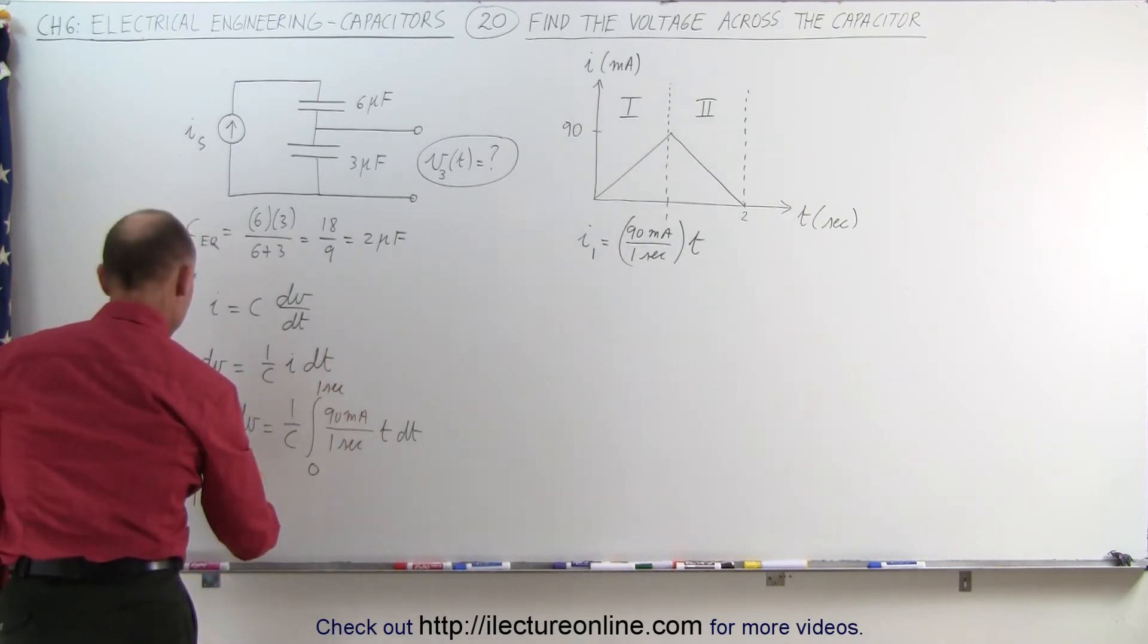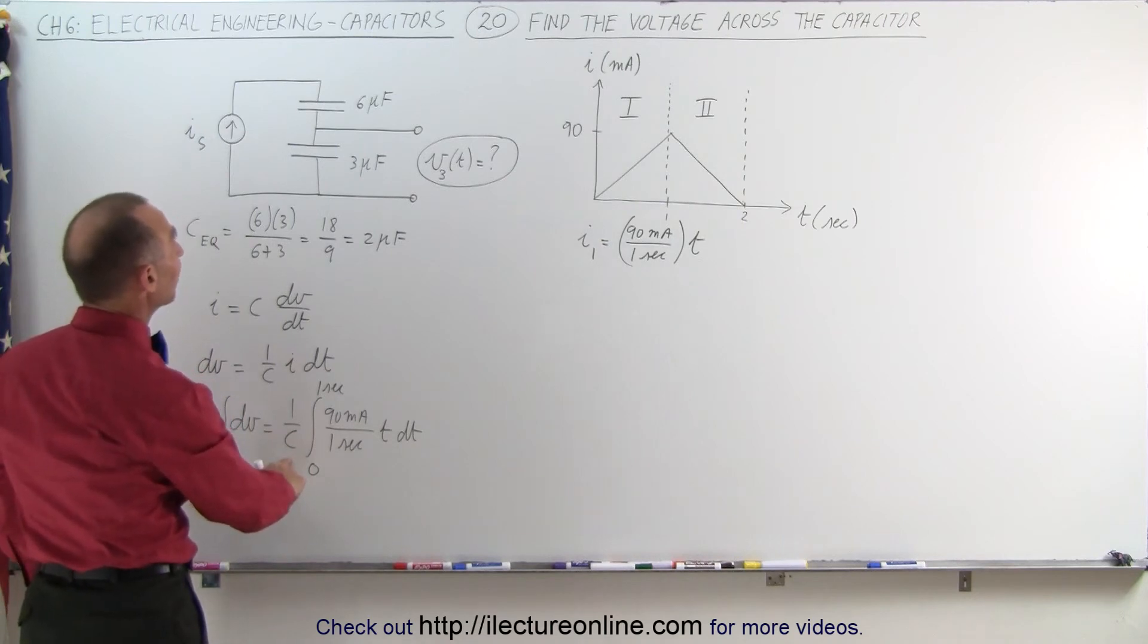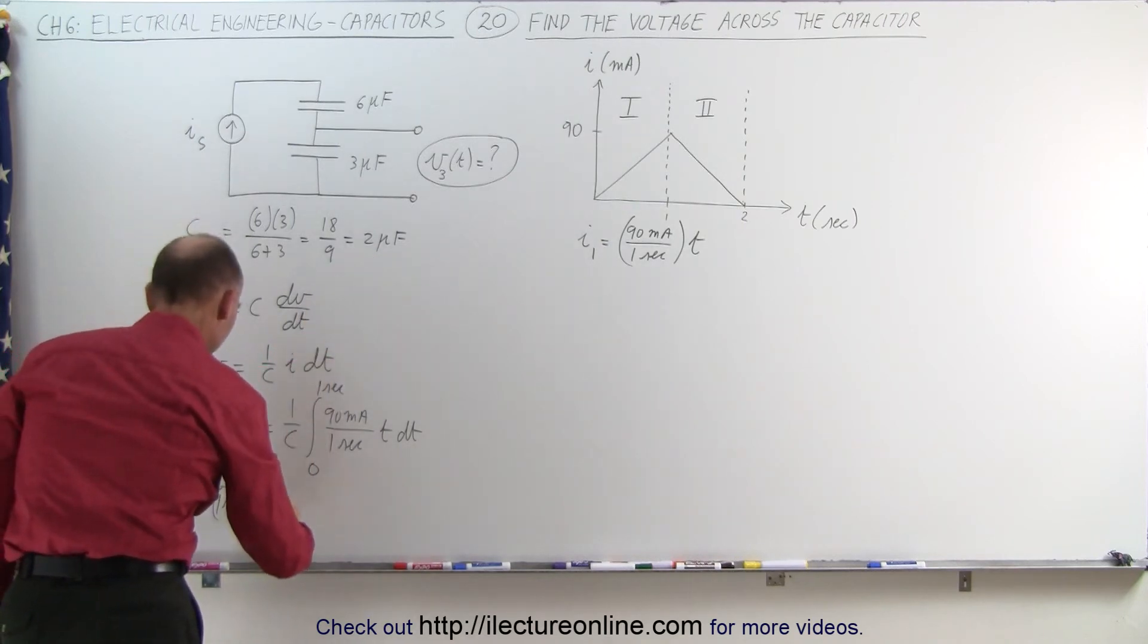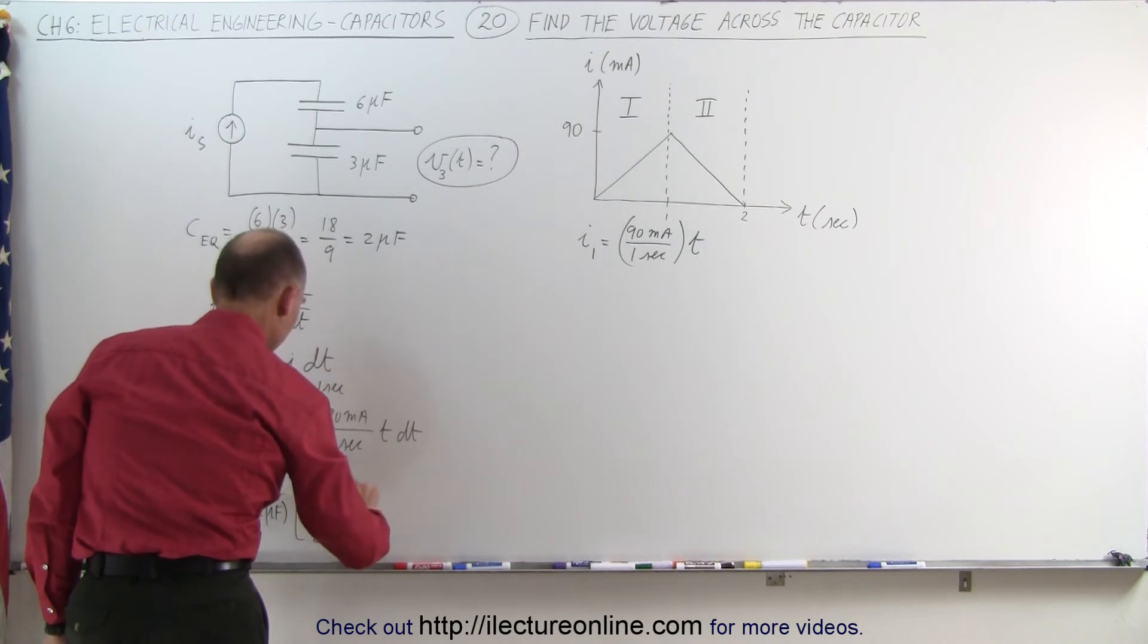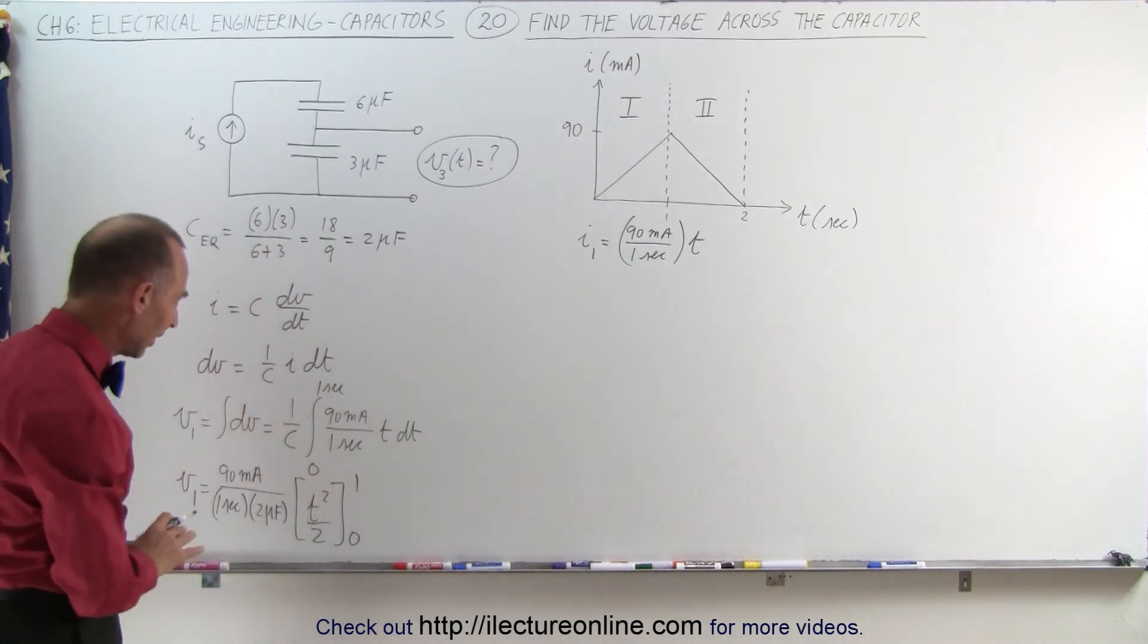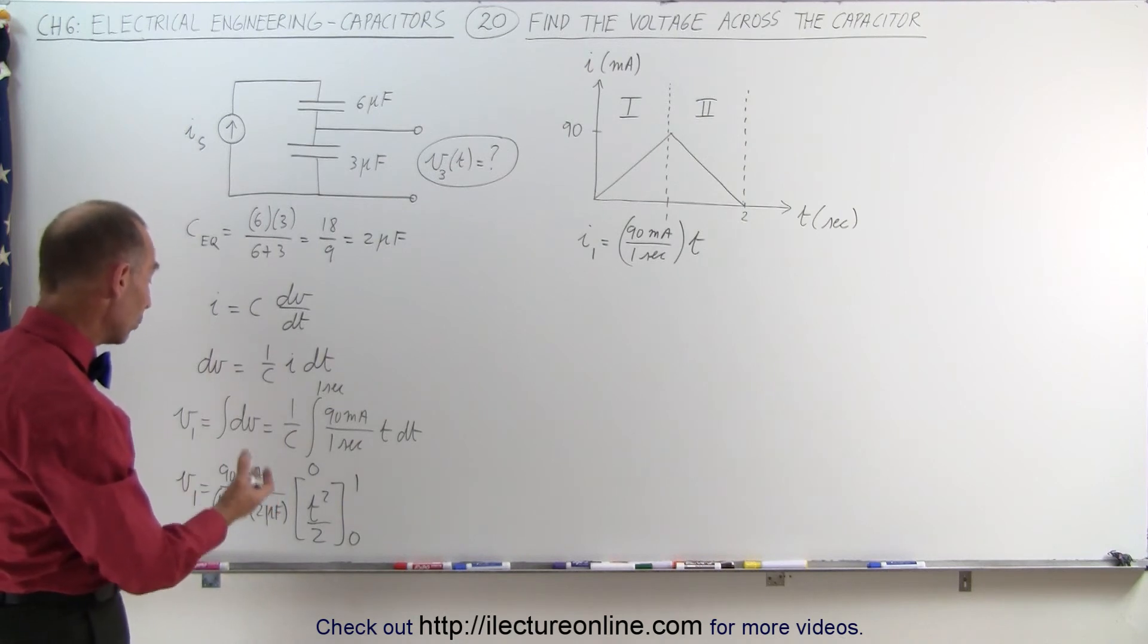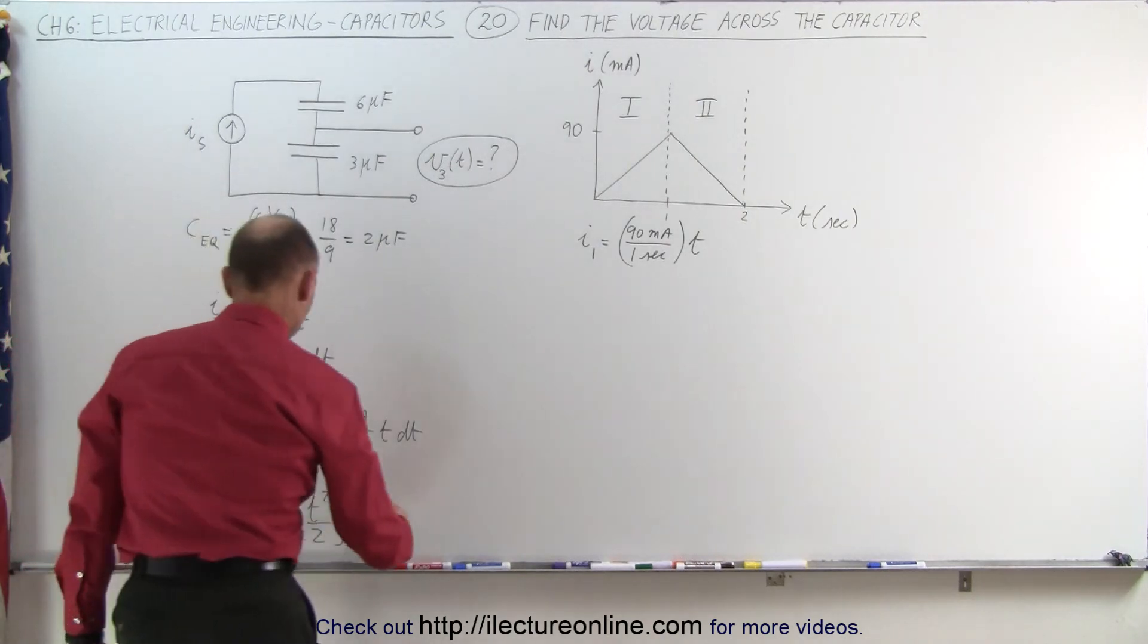That's going to be 90 milliamps, divided by 1 second, divided by C, in this case C would be the equivalent 2 microfarad capacitance, times, when we integrate T dt, we get T squared over 2, evaluated from 0 to 1. Of course, when we plug in the lower limit, we get 0, when we plug in the upper limit, we get 1 half.